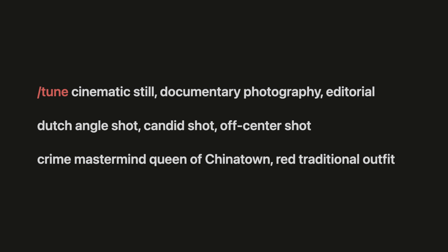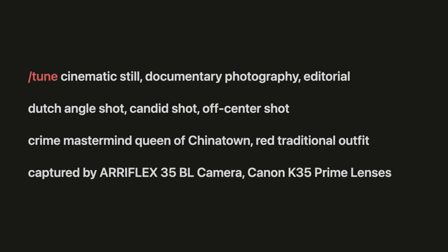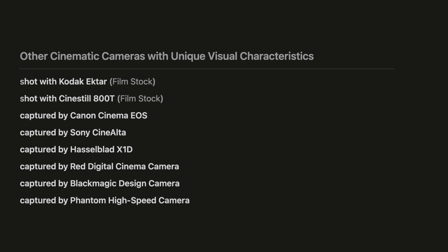That's why I added documentary photography and editorial keywords to my prompt, to train Midjourney to include realistic-looking people and places in the cinematic aesthetic. Most Midjourney images you see online are symmetrical with the subject generally in the center. We want our style to be different, so we're adding Dutch angle shot, candid shot, and off-center shot keywords to create and fine-tune off-center tilted shots. My subject and place are added as a placeholder for now — once we fine-tune our style, we can change them to anything we want. My choice of camera and lens for elevated cinematic look are iFlex with Canon K35 prime lenses, but you can experiment with other cinematic cameras and film stocks with unique visual characteristics.